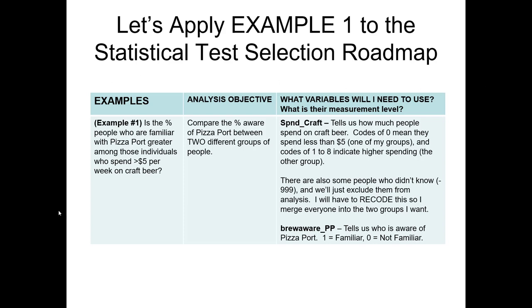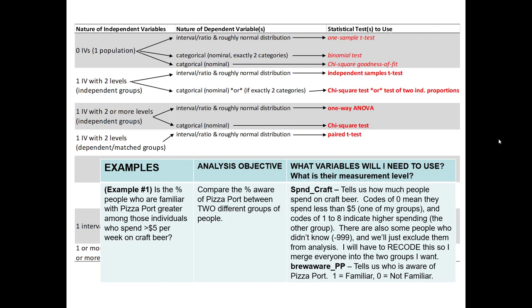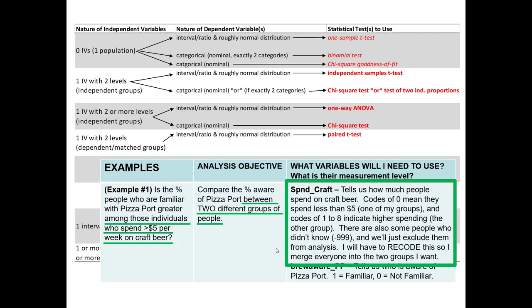Let's apply our overall research question, analysis objectives, and identified variables using the statistical test selection roadmap. We solve from left to right to figure out the right test to use. The first thing I notice is that I want to compare between two different groups of people, splitting my dataset into exactly two partitions. I'm going to use the spending on craft beer variable to create those two groupings.